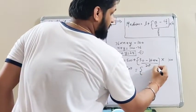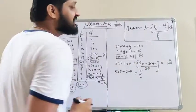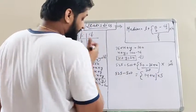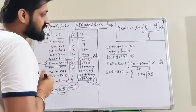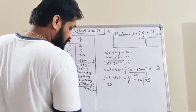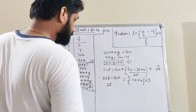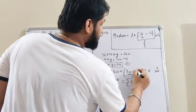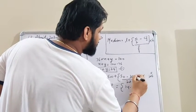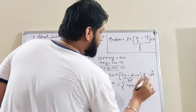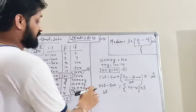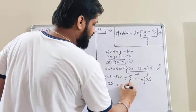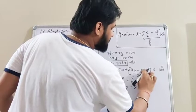Substituting: 525 minus 500 equals (50 minus (36 plus x)) divided by 20, multiplied by 100. This simplifies to 25 equals (14 minus x) multiplied by 5, which gives 25 equals 70 minus 5x.